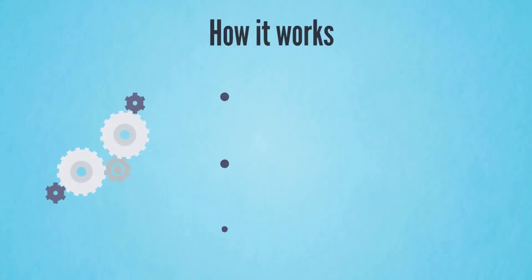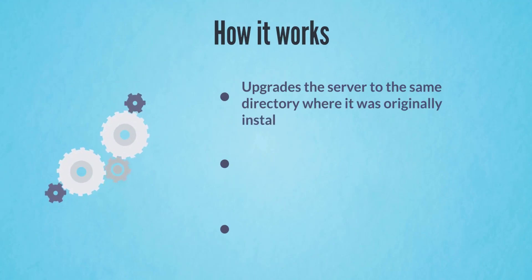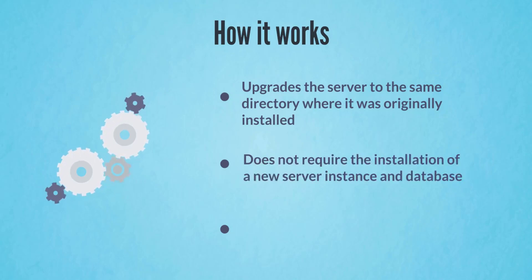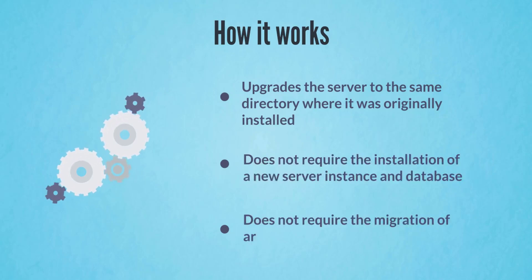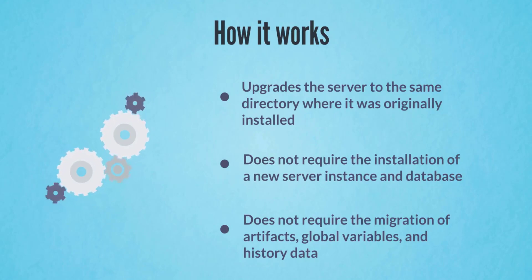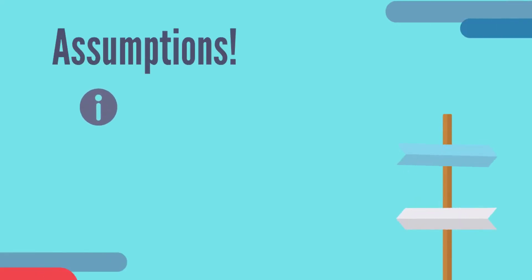The in-place upgrade method helps you upgrade your server to the same directory where the server was originally installed. It does not require the installation of a new server instance and database. The in-place upgrade method does not require the migration of artifacts, global variables, and history data.